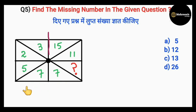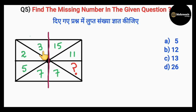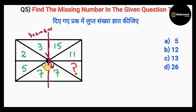Fifth question — we'll divide the figure into two parts for convenience. Looking at the numbers on the left side carefully: the first number is 3. If we do 3 into 2, that's 6, plus 1 gives 7, which is the opposite number of 3 here. Now the opposite of 2 has the missing number — we'll come back to that. Moving right: 5 into 2 is 10.